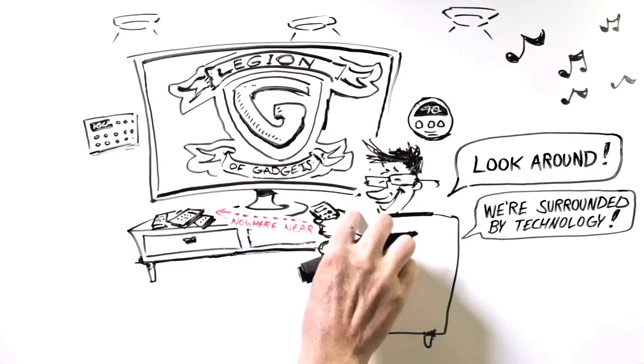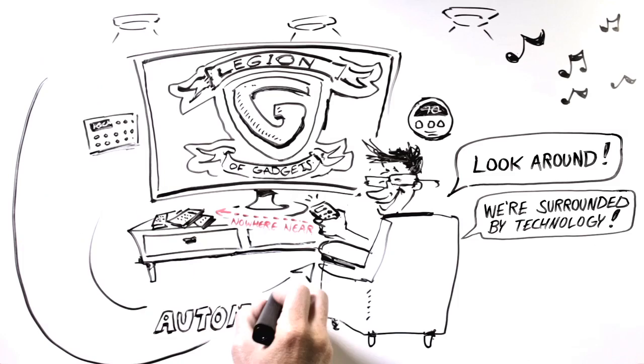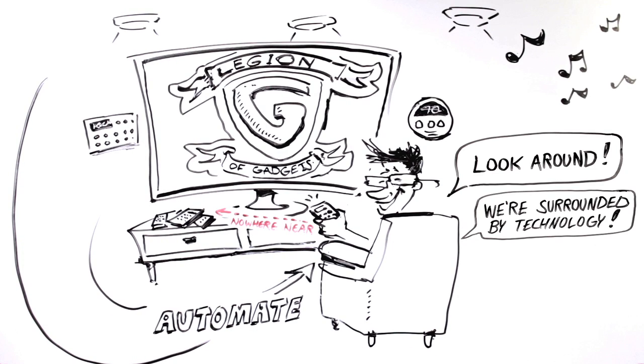That's right. Automate. Home automation systems unify the controls from many disparate systems into one easy-to-use control system.